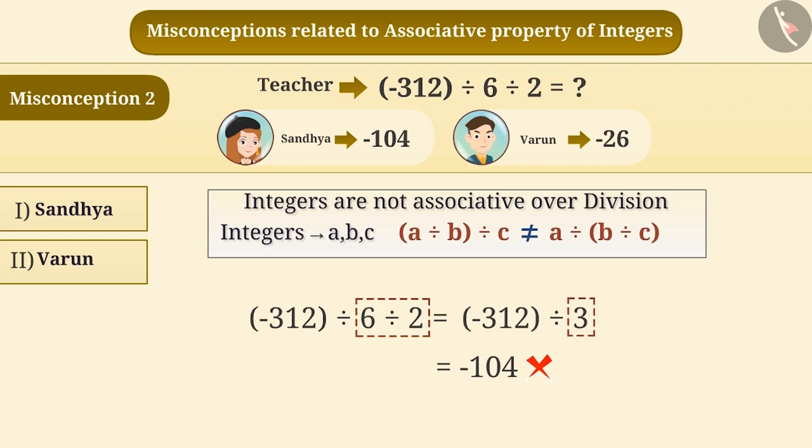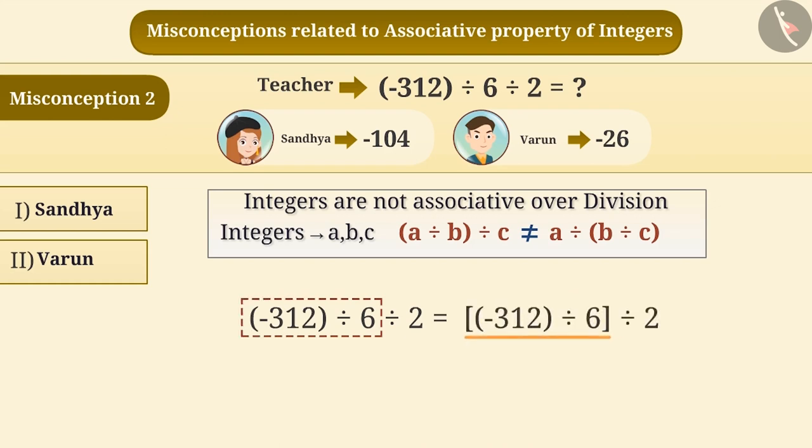Integers are not associative over division. Hence, to solve the given example, we cannot make a group of 6 and 2. To solve this, first, we have to make a group of minus 312 and 6. The result of this group is minus 52.